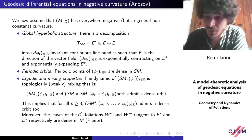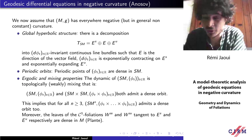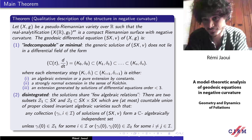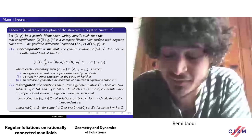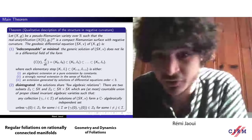The aim of the main theorem is to take this dynamical picture on the set of real points and produce from it a picture of the model-theoretic structure. You start with a pseudo-Riemannian variety over R whose real analytification is a compact Riemannian surface with negative curvature. Then two things can be said about the geodesic differential equation of (X, G). First, this differential equation of dimension 3 is already indecomposable — minimal in model-theoretic terminology. The generic solution of the geodesic equation does not lie in a differential field extension built from algebraic extensions.